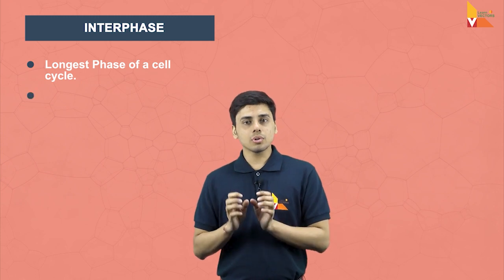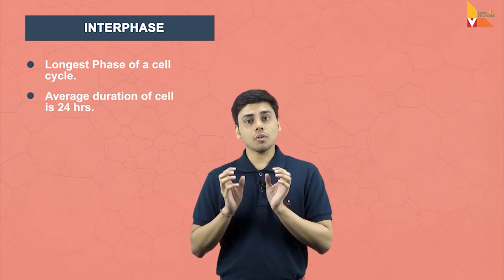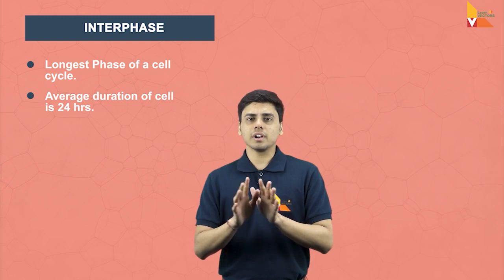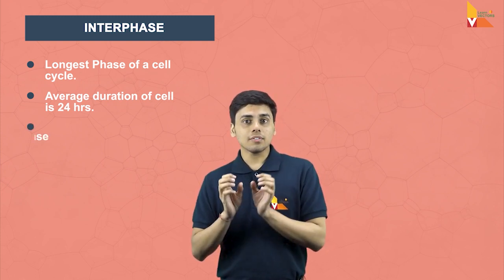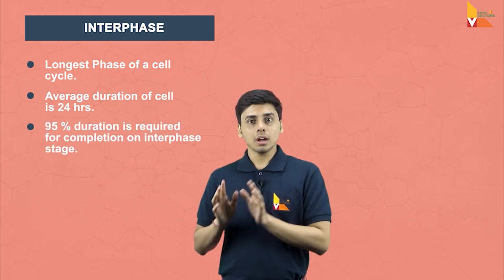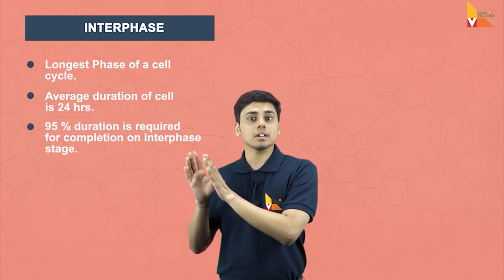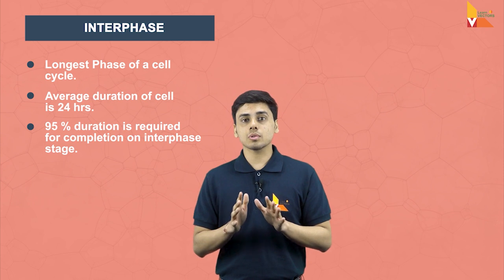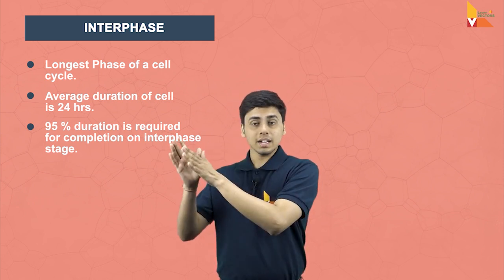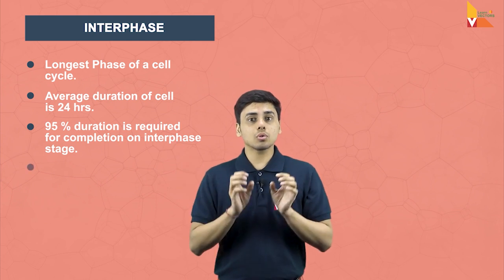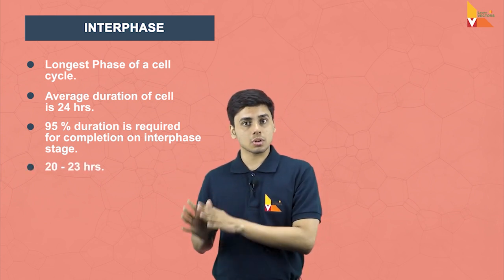Interphase is the longest phase of a cell cycle. The average duration of the cell cycle of a human cell ranges for about 24 hours. Out of which, 95% of the duration is taken alone by the interphase stage, which corresponds to approximately 22 to 23 hours. So the interphase stage takes about 22 to 23 hours to complete.